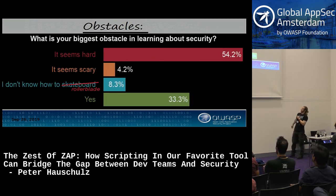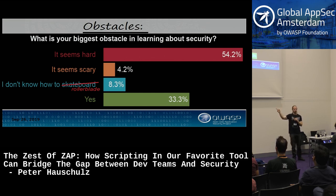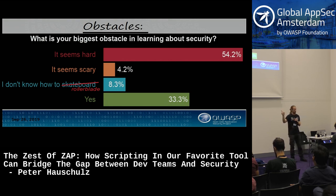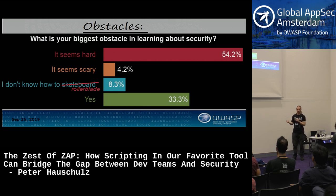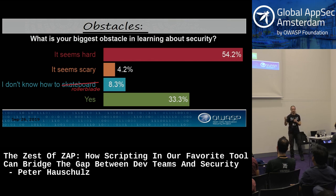The biggest obstacle to learning security is that it seems hard or scary. Coding's hard, testing's hard, anything technical is hard, but something special about security's hardness prevents people from overcoming these obstacles. That's why it's important to acknowledge that these obstacles exist so we can try to overcome them.